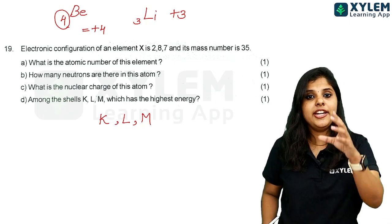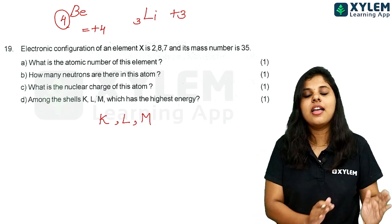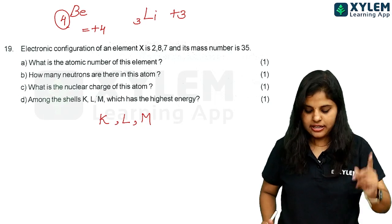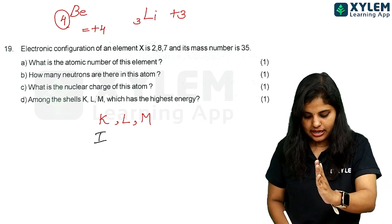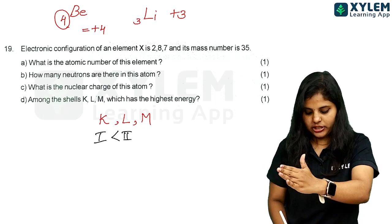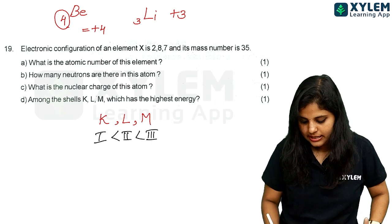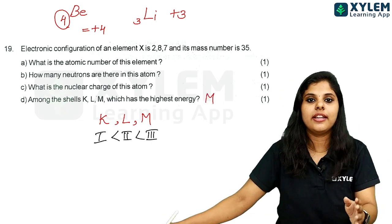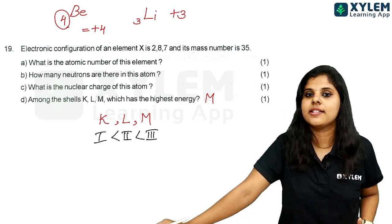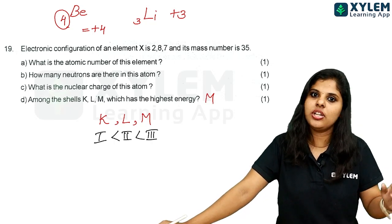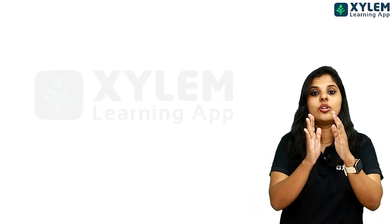If you have a shell, you will have electrons. First shell is K shell. Then L, then M. So M shell is the highest energy shell. Lowest energy, least energy, is the first shell — K shell. Is it clear? Yes.